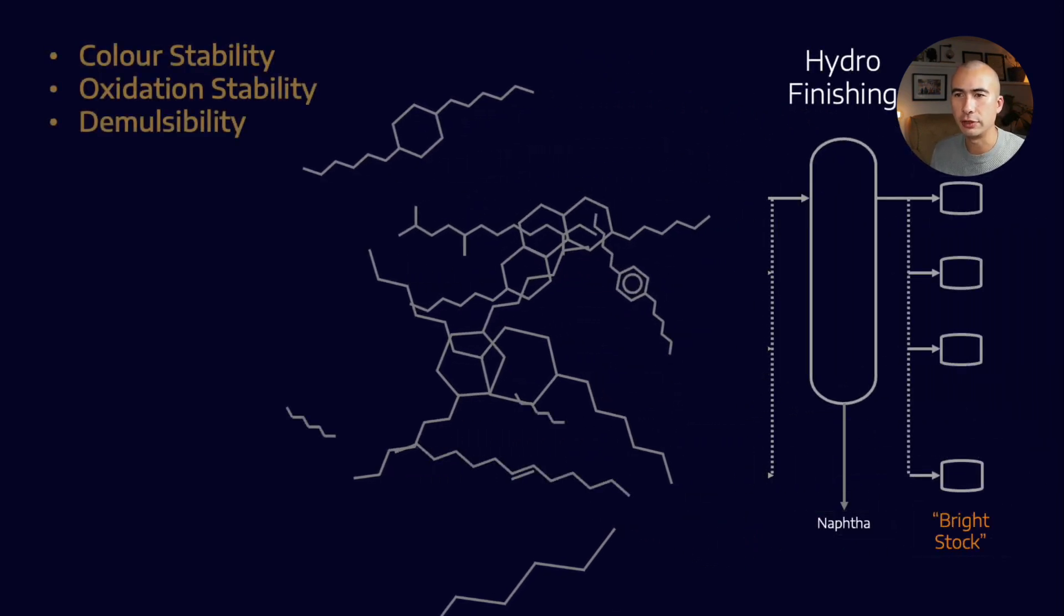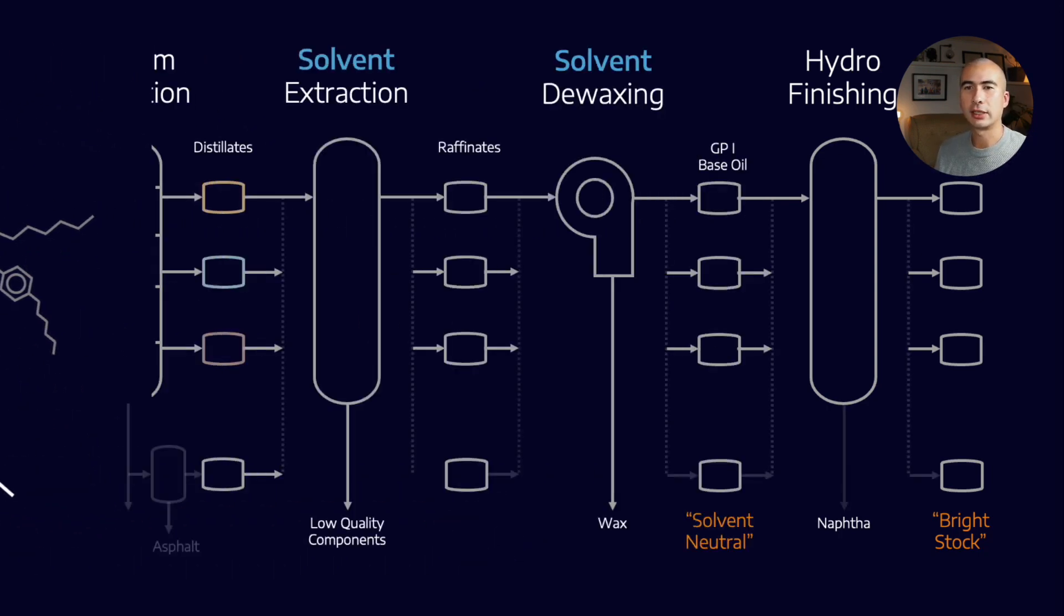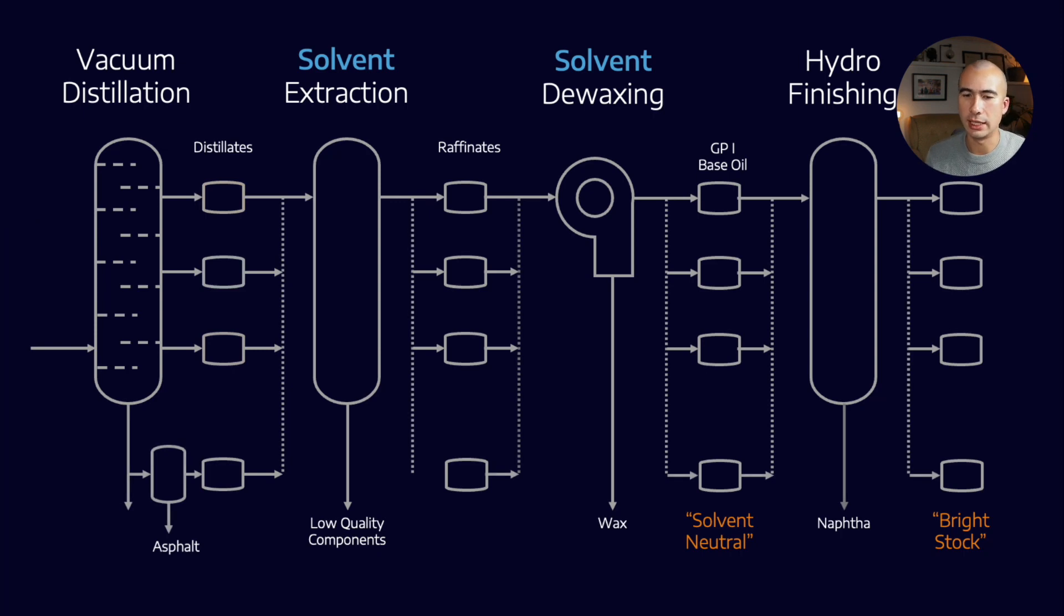And then finally, we move on to hydrofinishing, which is an exercise in trying to saturate some of those double bonds. What that helps with is things like colour stability, oxidation stability, and demulsibility.